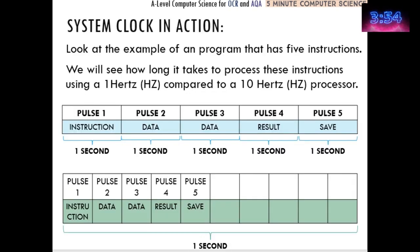That's 3.4 million fetch execute cycles that can potentially take place. But of course, today we're talking about gigahertz or into the billions rather than millions. Here, we've got a set of five instructions that need to be processed: instruction, data-to-data, result, and save. Each of those is going to happen per clock cycle. So a one hertz processor can only produce one pulse per second. So in the first second, this instruction is carried out or executed. In the second pulse, that's the second second, this bit happens. And then the next second, this happens and so on. So it takes five seconds to get through this action that needs to take place.